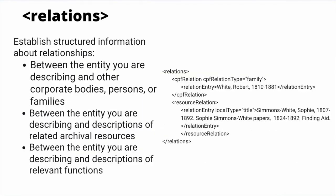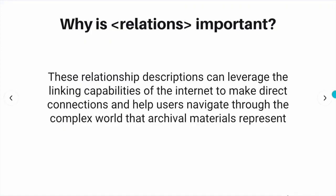The third section in EAC-CPF, the Relations section, is an innovative and impactful component to the standard and has since been included in EAD 3. Here, you are able to establish structured information about relationships between the entity you are describing and other corporate bodies, persons, or families; between the entity and descriptions of related archival resources; and between the entity and descriptions of relevant functions. These relationship descriptions can leverage the linking capabilities of the internet to make direct connections and help users navigate through the complex world that archival materials represent.